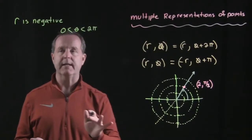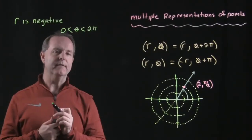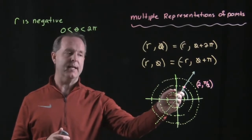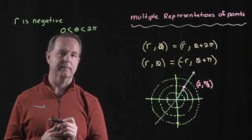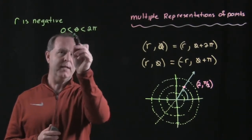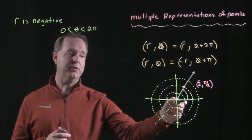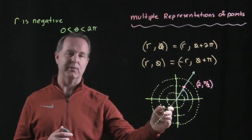Another example we can look at is r is negative, but θ is between 0 and 2π. So how can the same point be represented with these restrictions? If it's between 0 and 2π, that means it has to be within one complete revolution. So in this particular case, I'm going to add π to it.